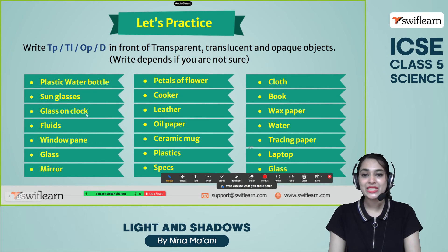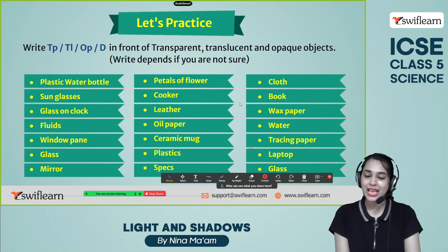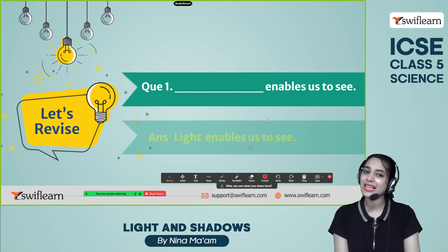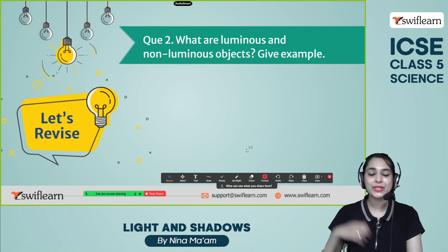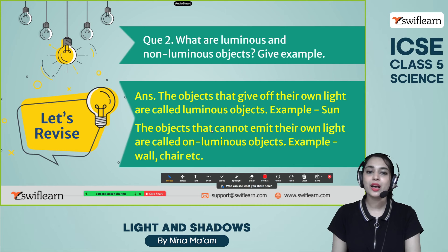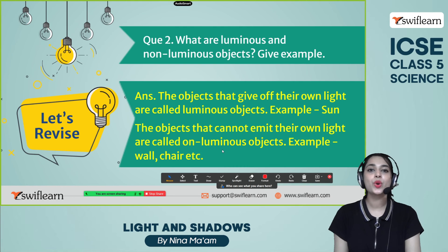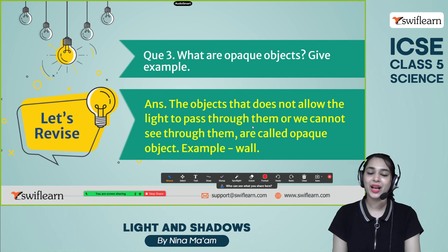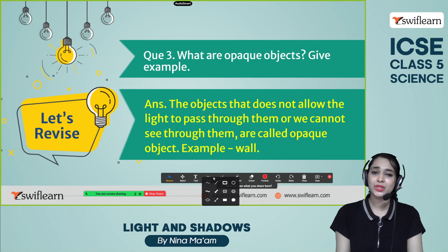Take your notebook and pen and write down all these items, categorizing them as transparent, translucent, or opaque. If you are not sure, you can write 'depends.' Now let's revise. Quiz 1: What enables us to see? It is light — light enables us to see. Quiz 2: What are luminous and non-luminous objects? Luminous objects emit their own light, such as the sun. Non-luminous objects cannot emit light, such as a wooden wall or chair. Quiz 3: What are opaque objects? Objects that do not allow light to pass through them, such as a human, this mobile, and books.